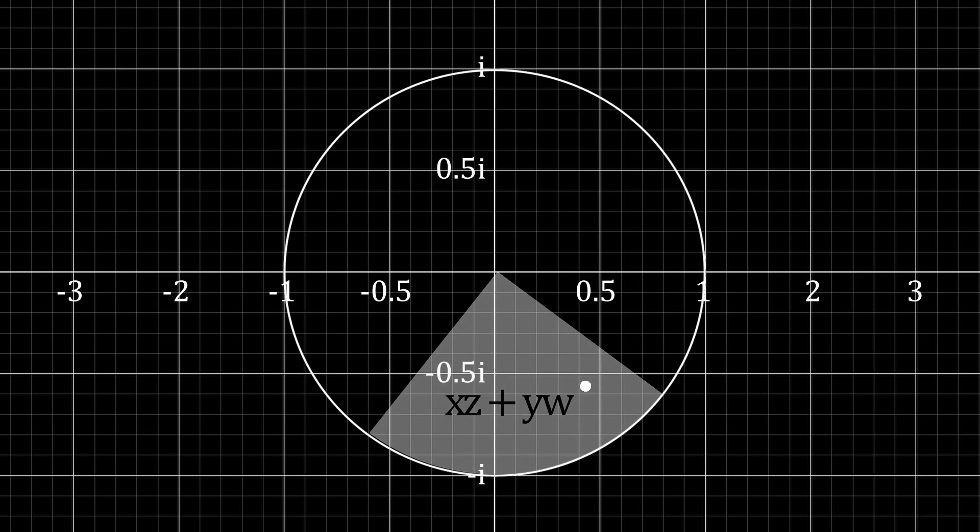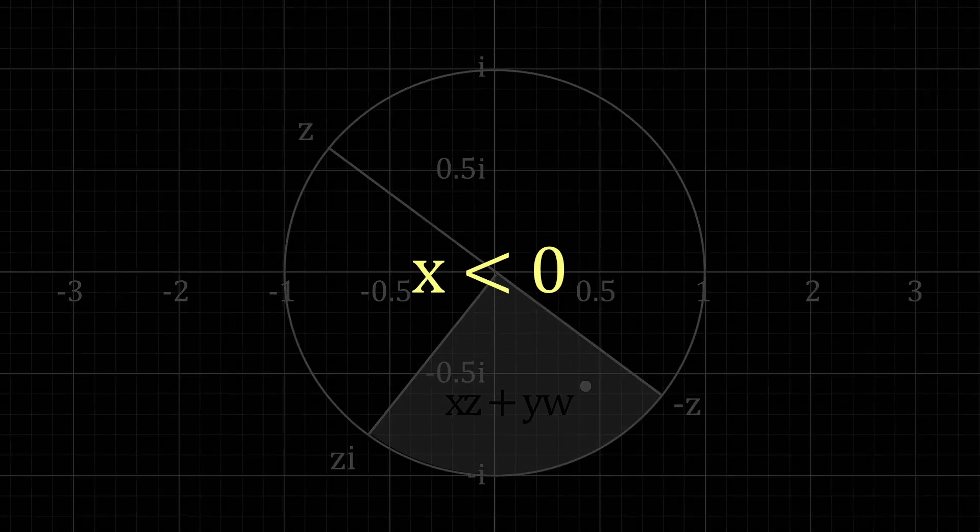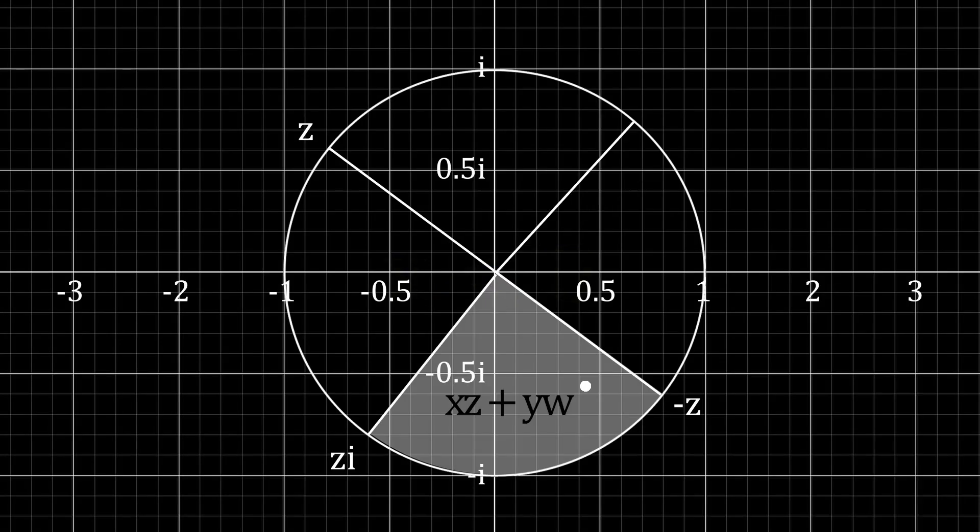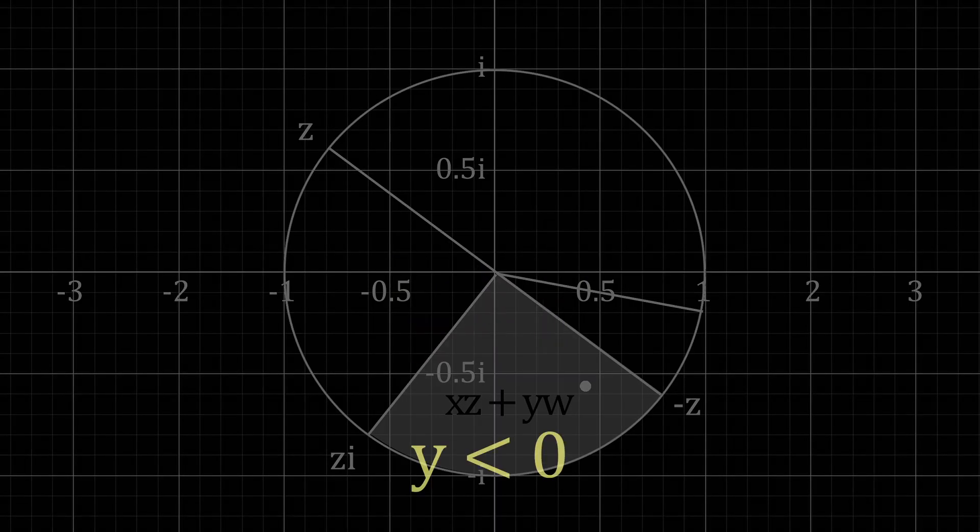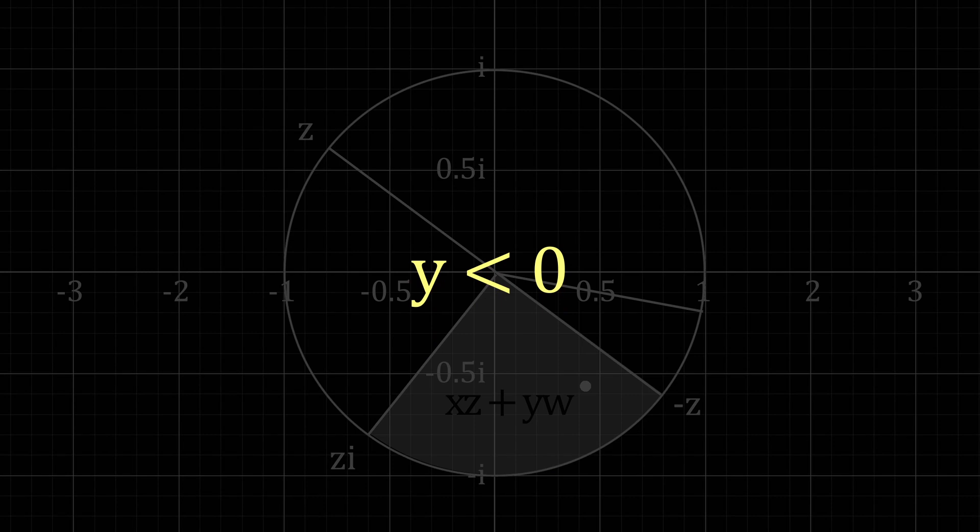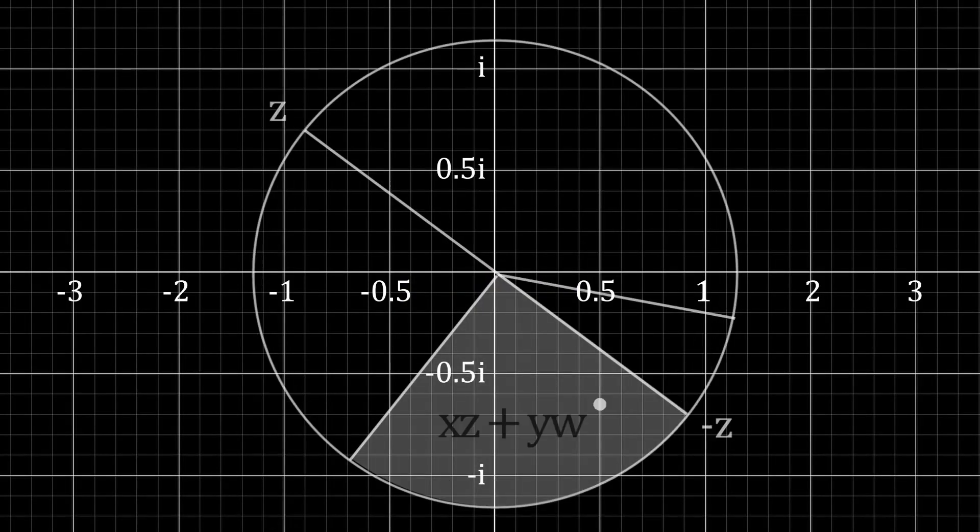It becomes evident that no matter the values of z and w, this section is always on the side opposite to z. This means that in order to get to this section, we need a negative value of x. It's also clear that in order to get there in terms of w, y must be negative too. We now know that both x and y are less than 0.